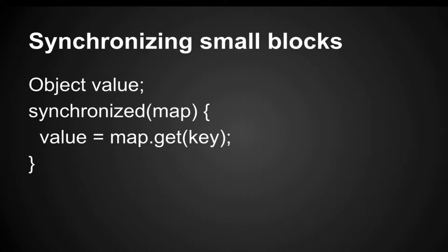When you use synchronized, avoid synchronizing on the method itself because the method can potentially have a lot of code in it. Try to limit synchronized to a small block of code that is necessary. A very popular example is when you need to synchronize a data structure that is not synchronized in itself. Data structures like HashMap are not synchronized, so you have to synchronize them.